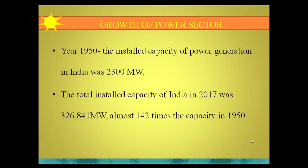In 1950, the installed capacity of power generation in India was 2300 megawatt — this was when the five-year plans started. The total installed capacity in 2017 was more than 326 gigawatt, almost 142 times the capacity of 1950. This marked the end of the 12th five-year plan.